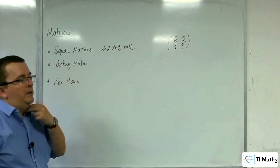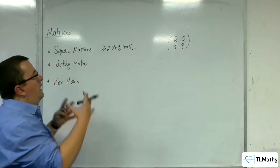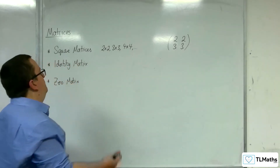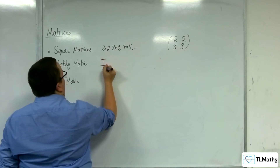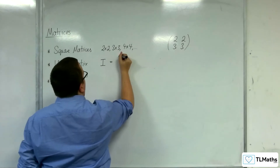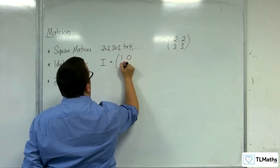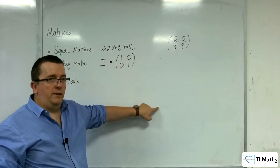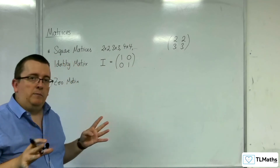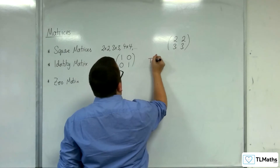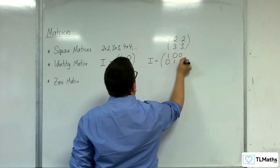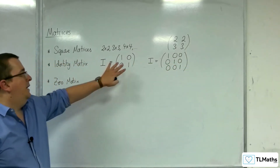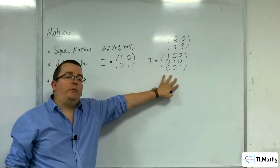The identity matrix — there is one for each square matrix: 2 by 2, 3 by 3, 4 by 4. We refer to this as I — capital I. So in 2 by 2 we'd be working with 1, 0, 0, 1. The identity matrix has the top left all the way through to the bottom right as 1s, and all other elements are 0. So the 3 by 3 would be 1, 0, 0, 0, 1, 0, 0, 0, 1. That's the identity matrix for 2 by 2 and 3 by 3 matrices.